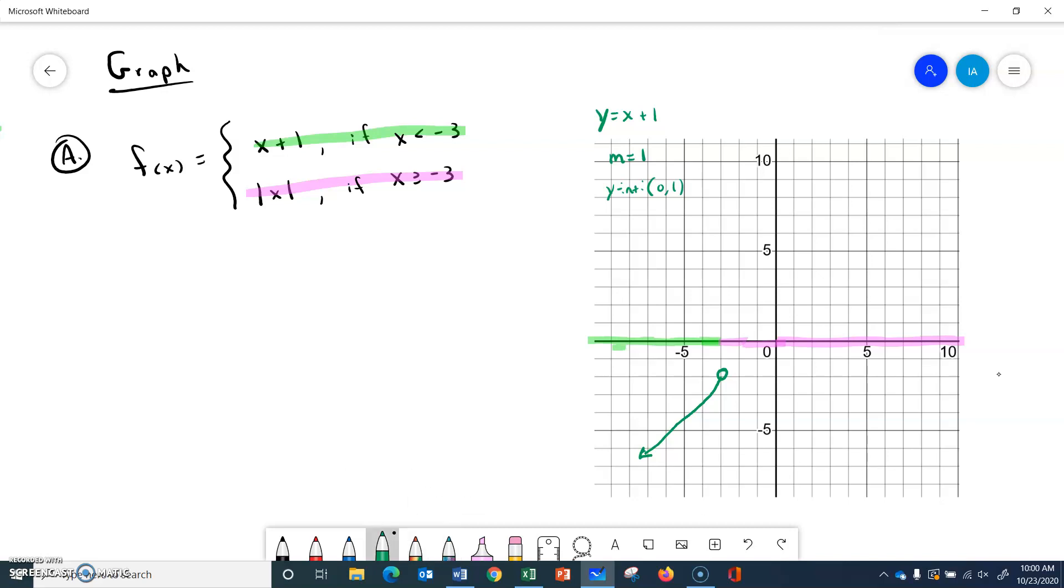So then purple. Absolute value of x if x is greater than or equal to negative 3. So absolute value from our parent functions looks like a v. And I could graph the whole v if I want to. The key here is I can graph more than I need, but I have to remember to come back and take the part I don't want away. So this is what the absolute value of x looks like. But I have to stop it at negative 3. So I'm going to come back and erase some stuff. And the fact that this is a greater than or equal to means there's a closed circle here.